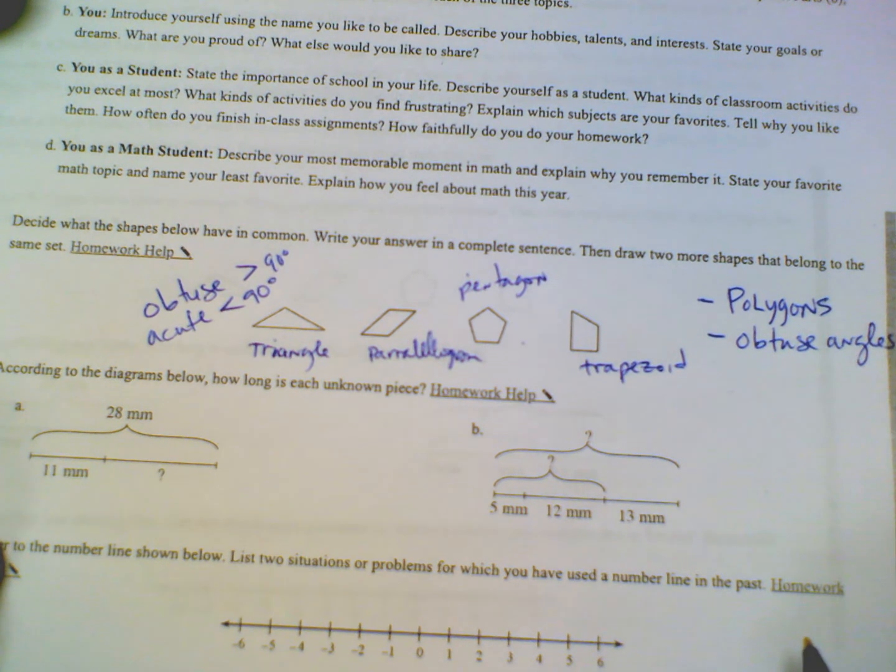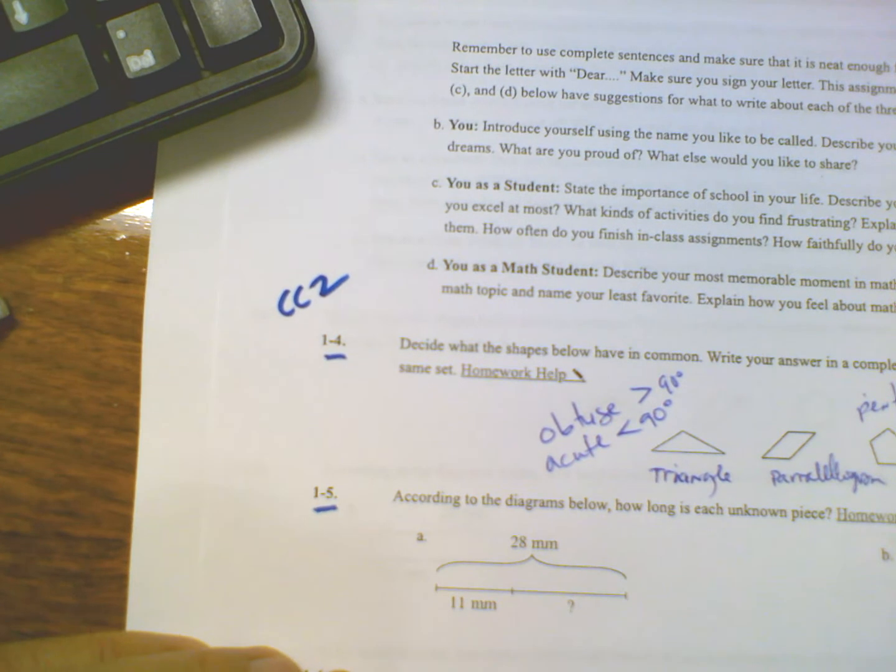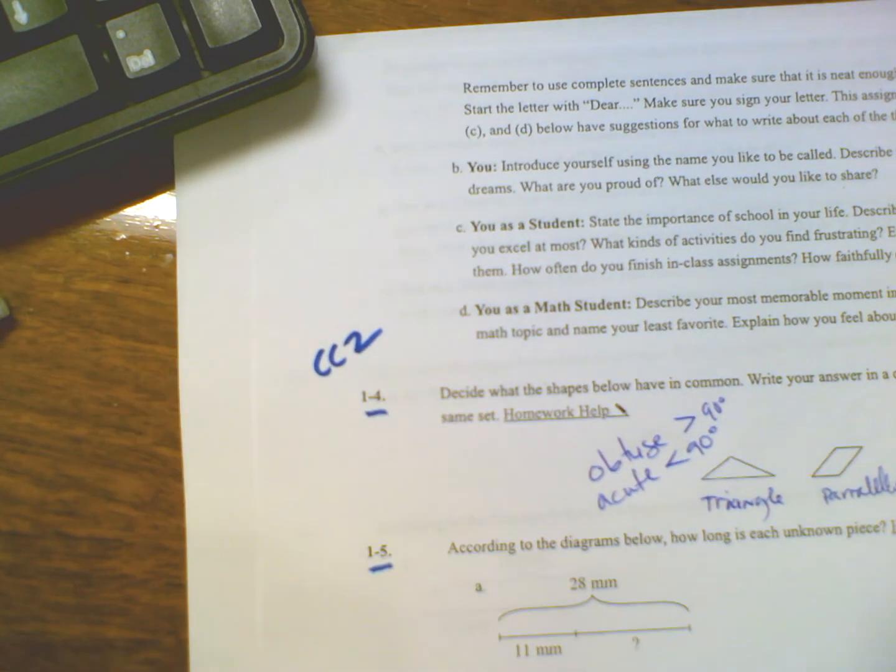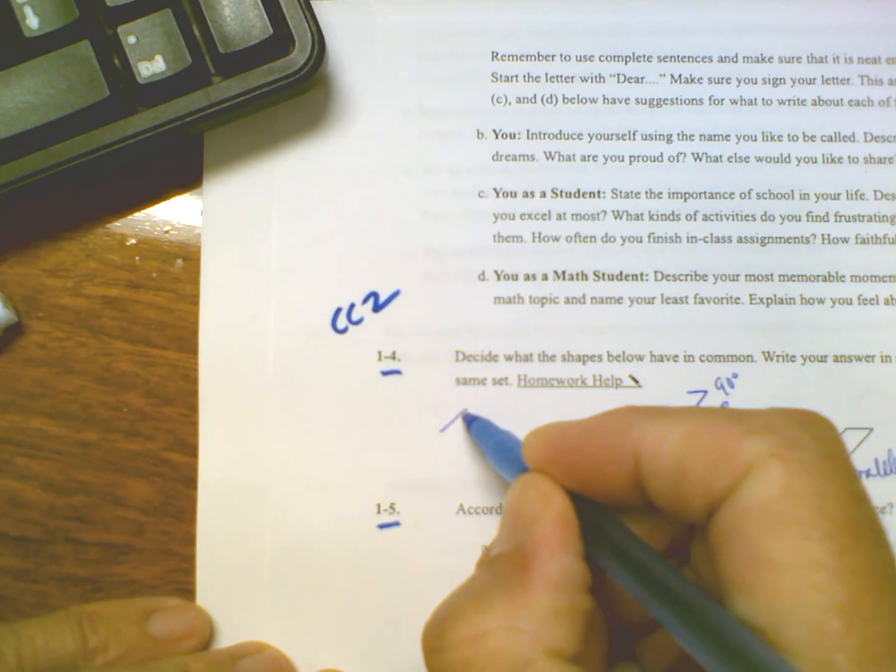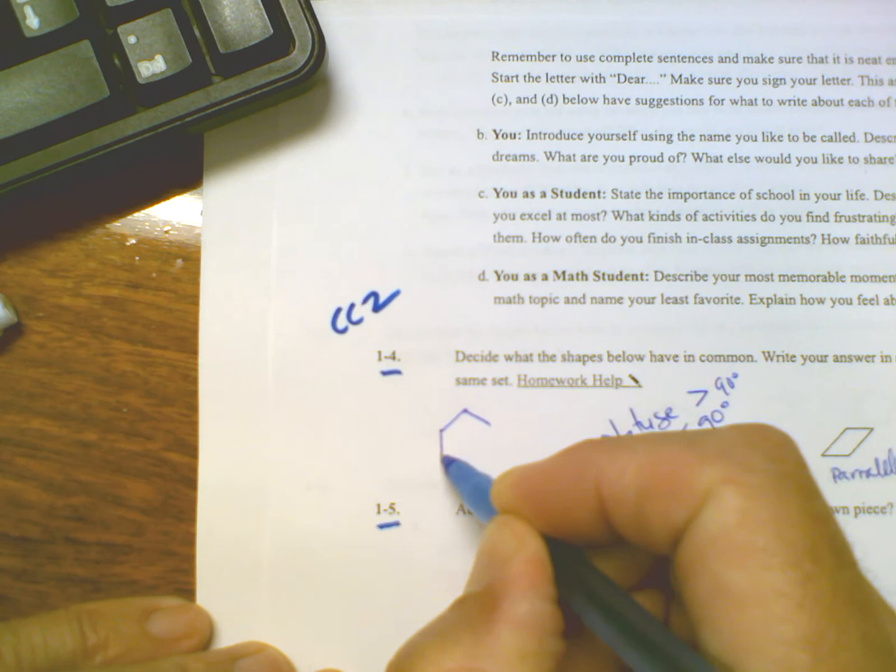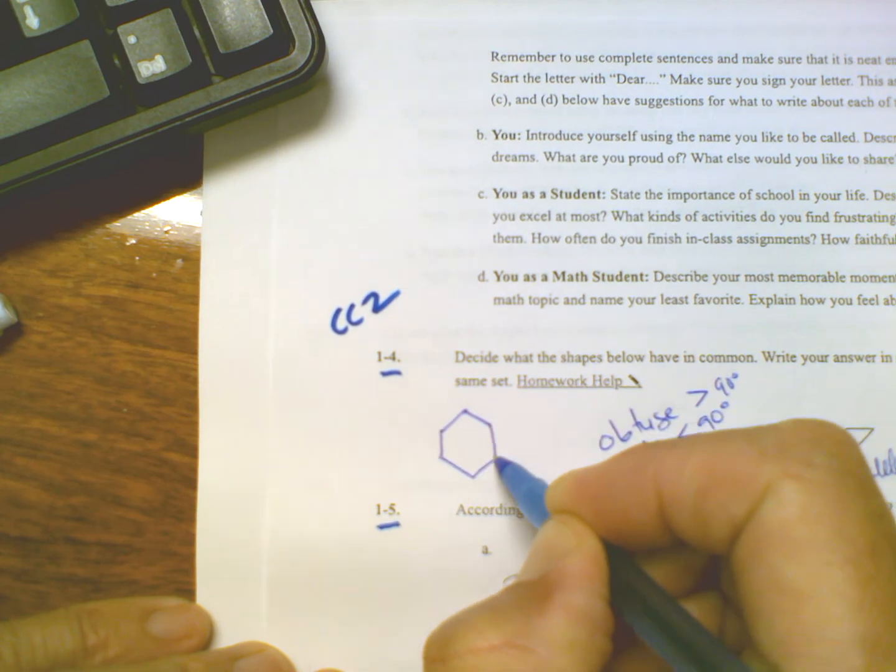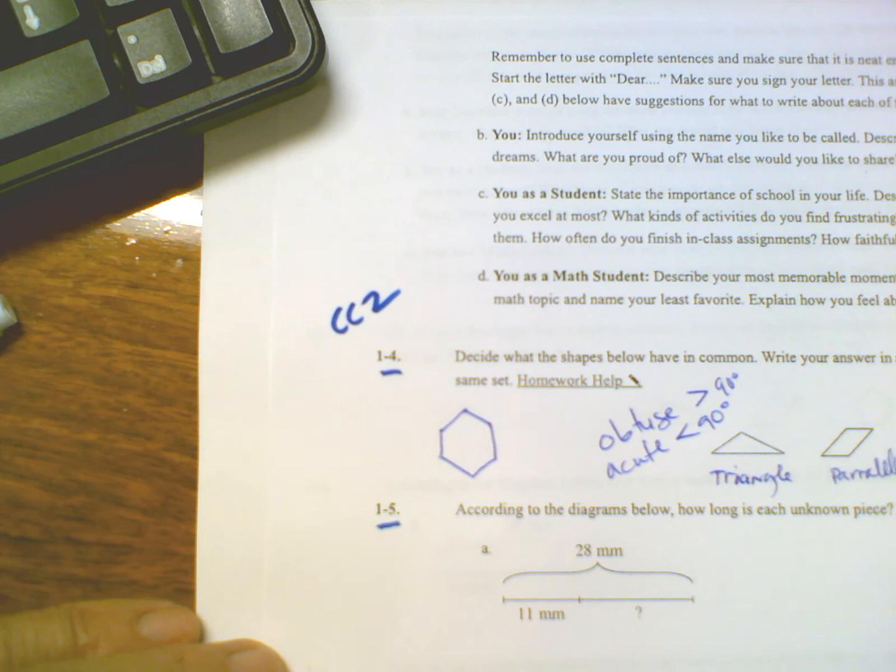The next thing is to draw two more shapes that belong in the same set. Well, we've got a pentagon. What would be the next thing past the pentagon? Let's do that one - this guy here, which is a hexagon. Six sides. A hexagon does have obtuse angles.